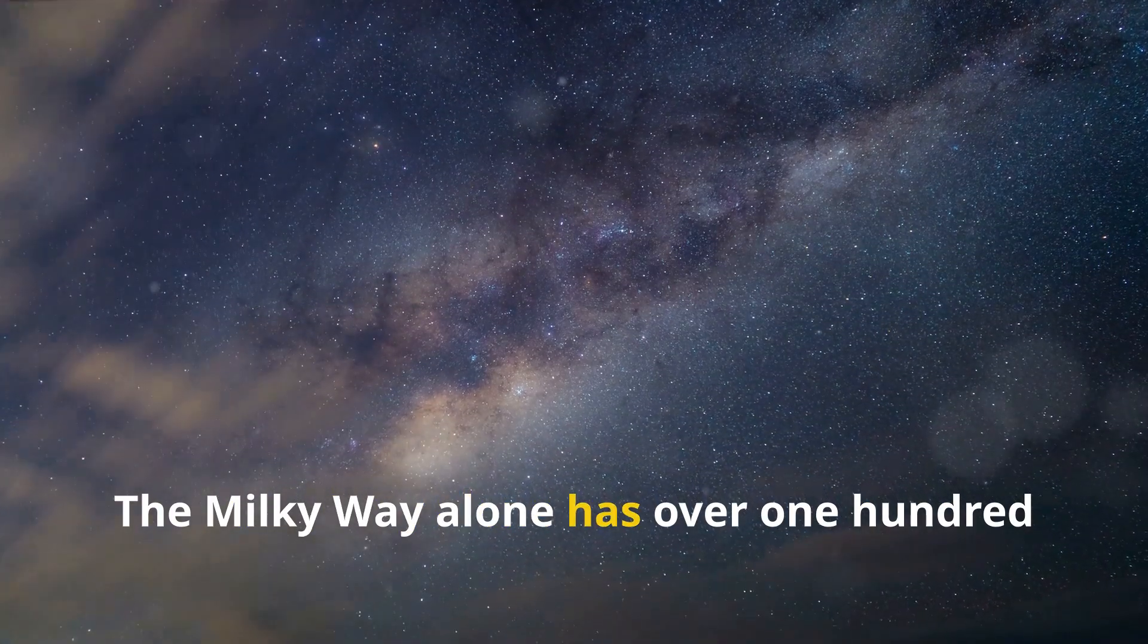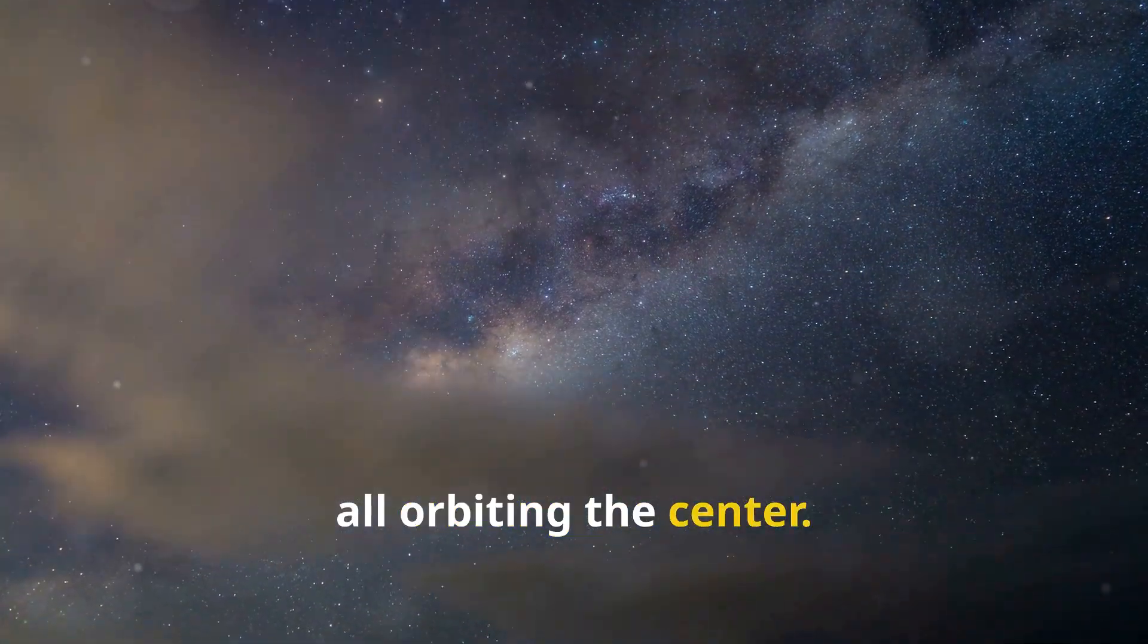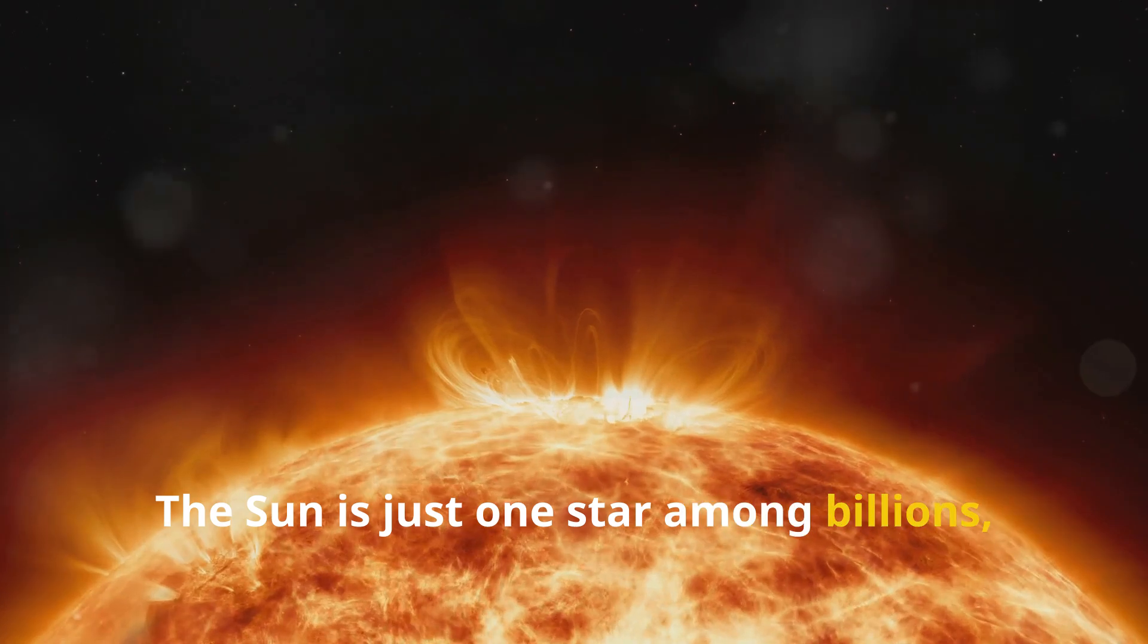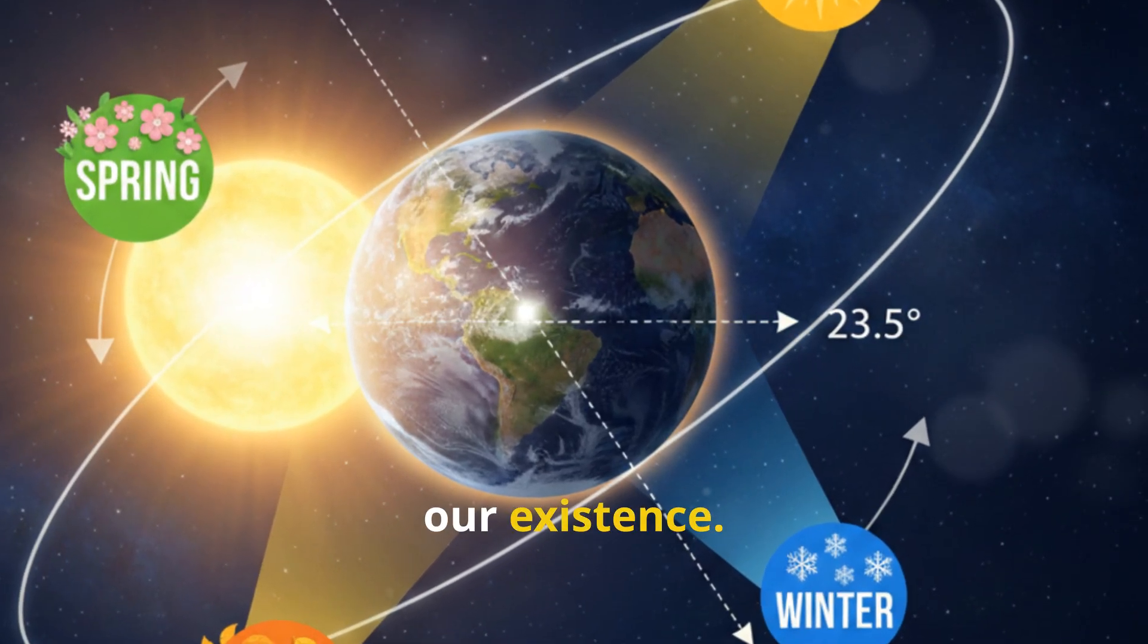Let's put this into perspective. The Milky Way alone has over 100 billion stars, all orbiting the center. The sun is just one star among billions, yet it defines our days, our seasons, our existence.